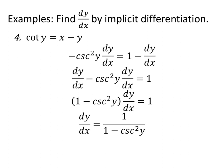Let's use some trig functions: cotangent of y equals x minus y. The derivative of cotangent — it's a co-function so the derivative is negative — is negative cosecant squared of y, multiplied by dy/dx, the derivative of the inside. On the right: derivative of x is 1, minus dy/dx. Adding dy/dx to both sides gives all dy/dx terms on the left. Factor out dy/dx, leaving 1 minus cosecant squared y. Divide to solve for dy/dx. This first differentiation step is the only calculus; everything else is algebra.